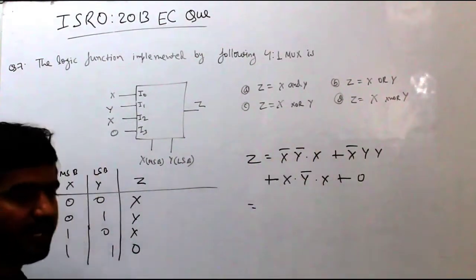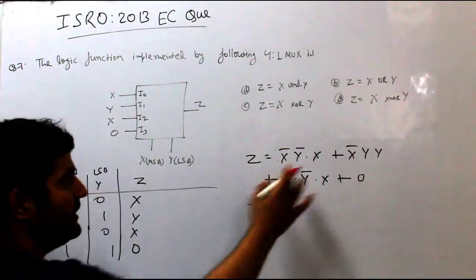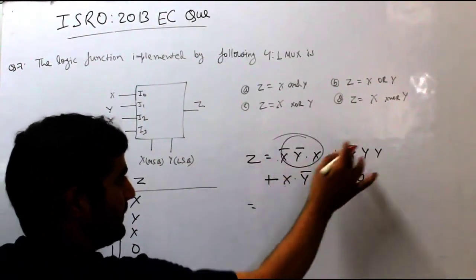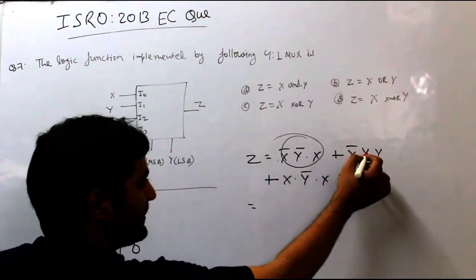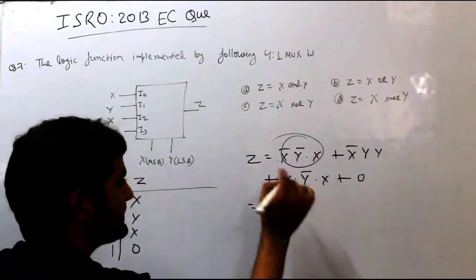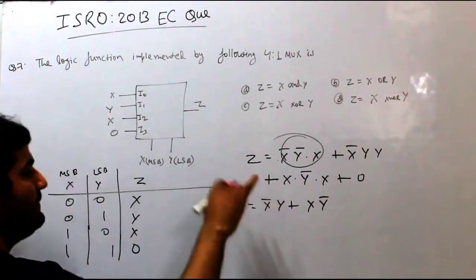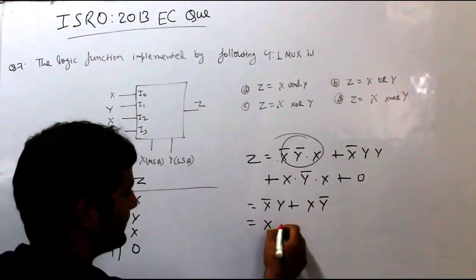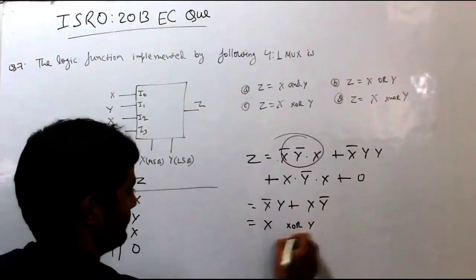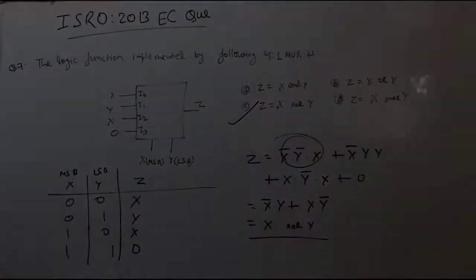x complement y plus x y complement equals y. This is x XOR y. This option is correct.